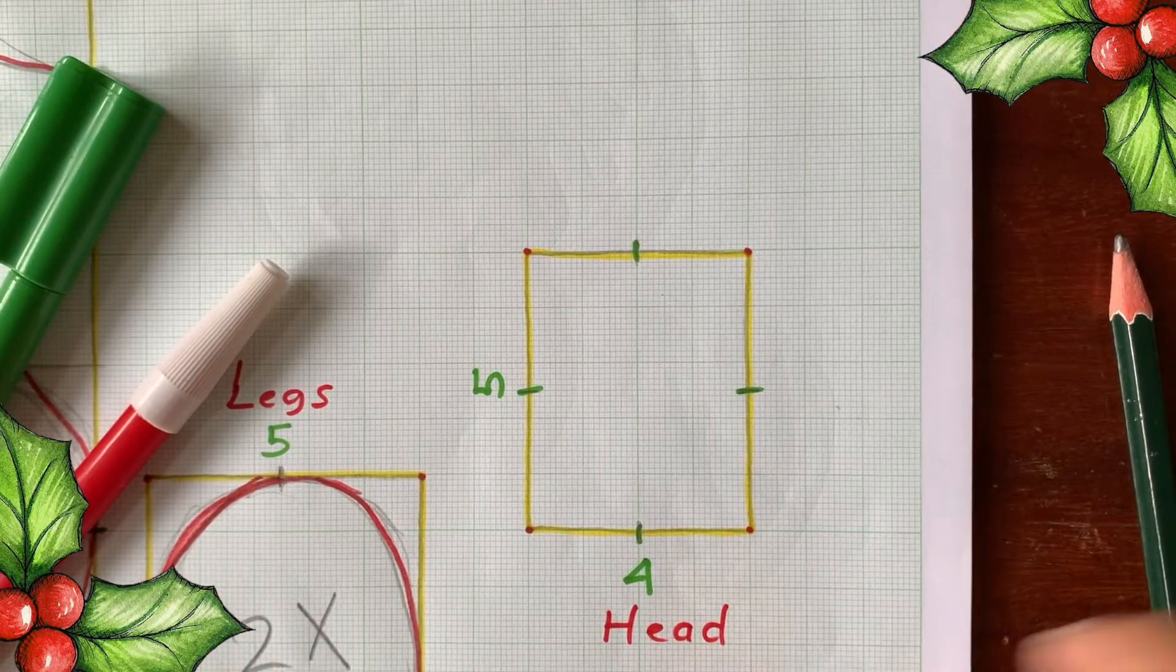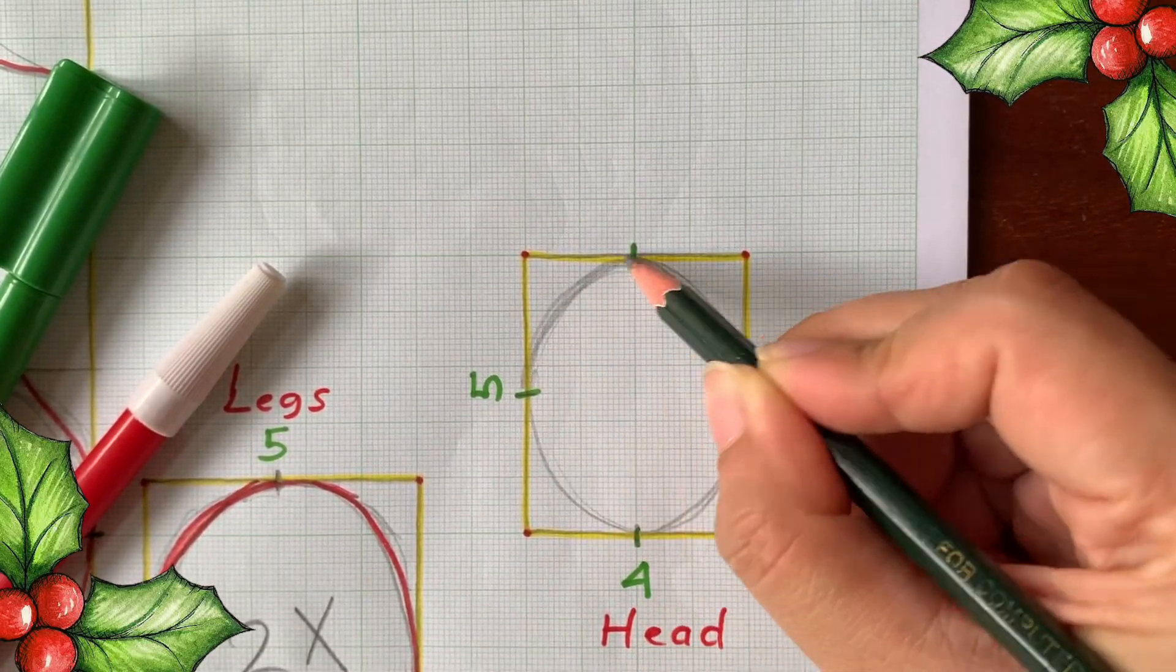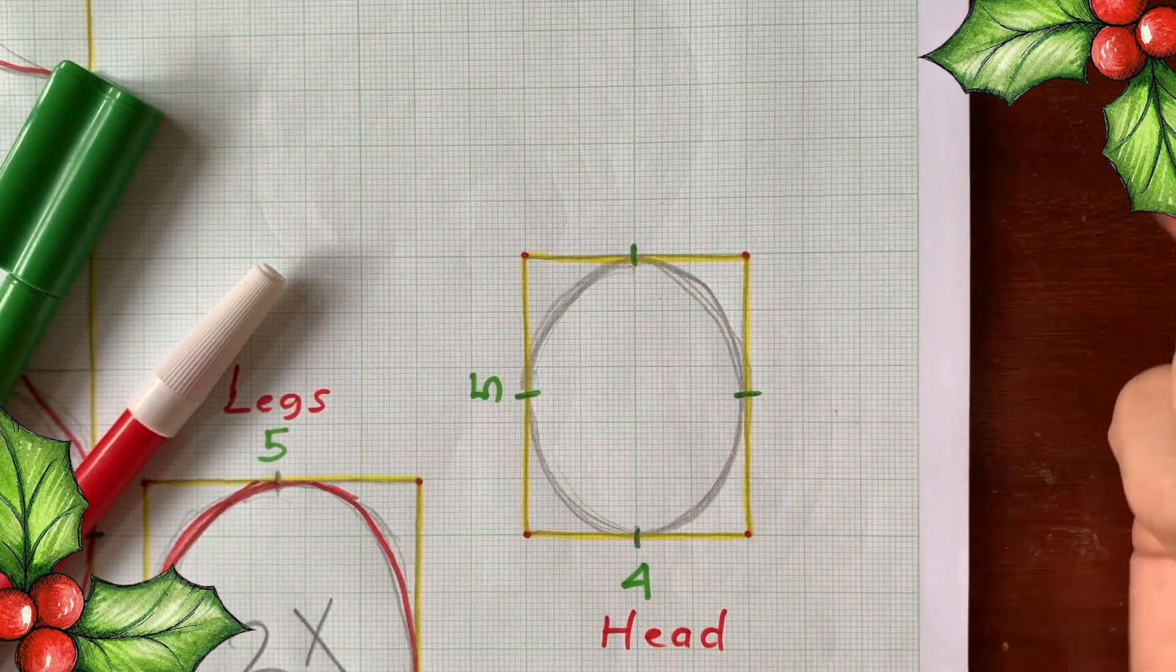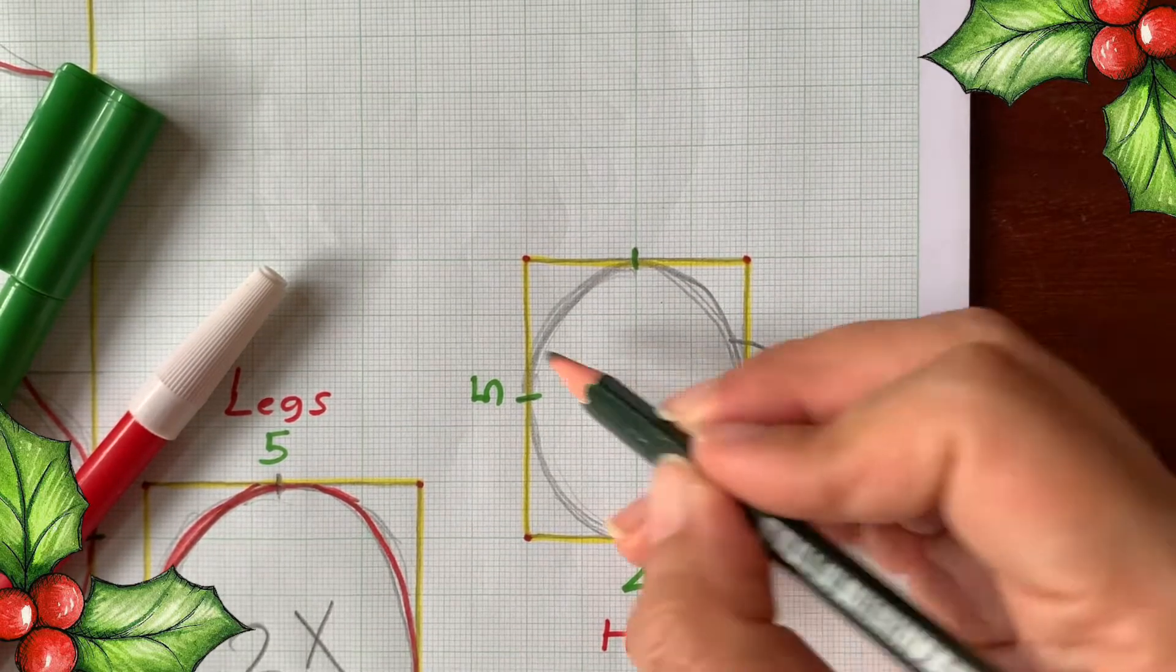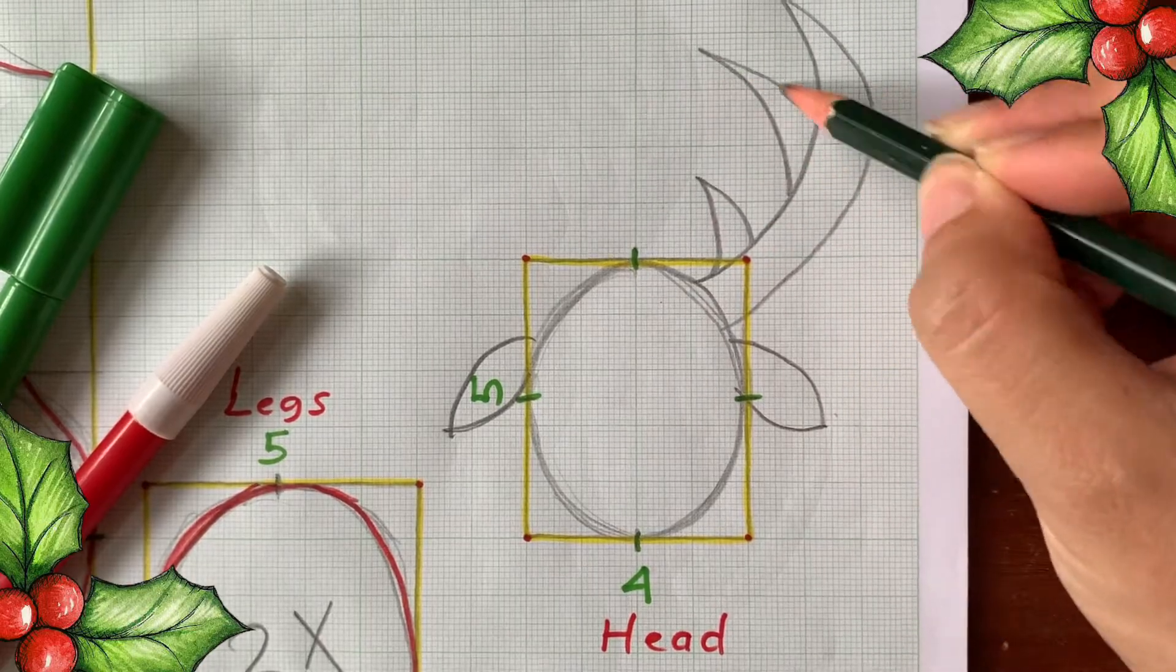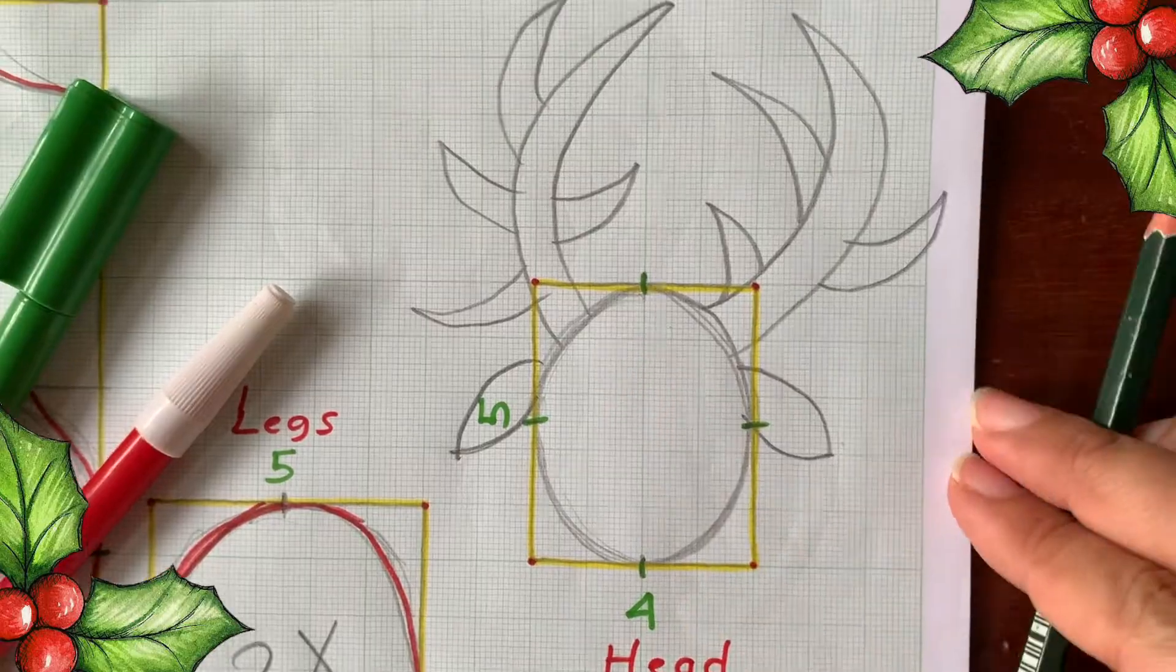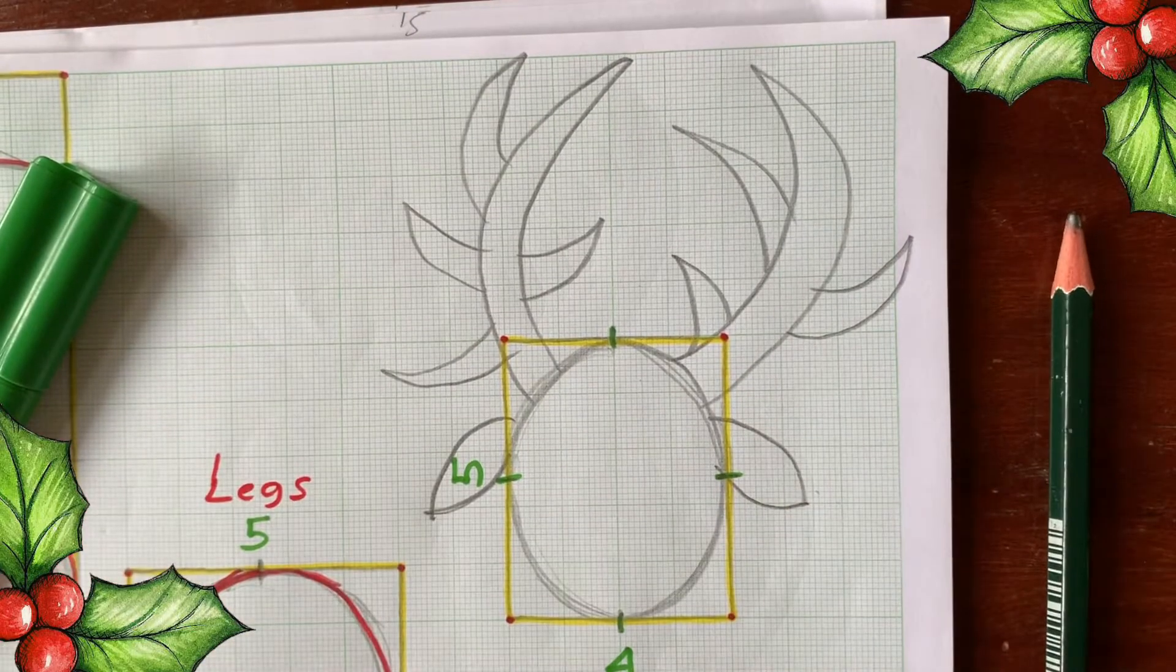And the last pattern, the head. Just start with a simple oval like this. Add some ears. And the horns. So you don't have to make the horns symmetrical, because naturally, there's no any symmetrical reindeer's horn.